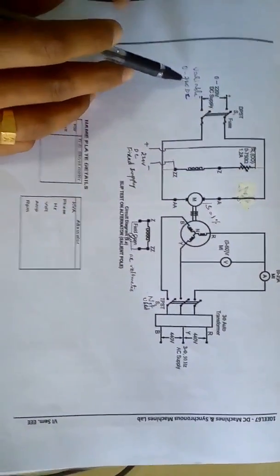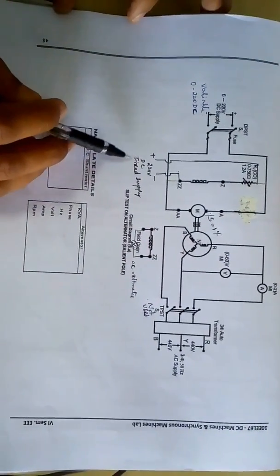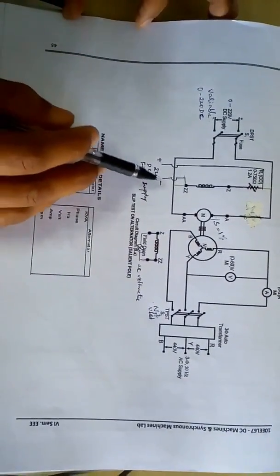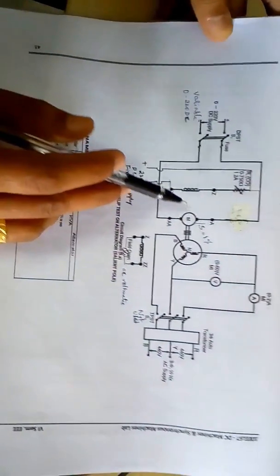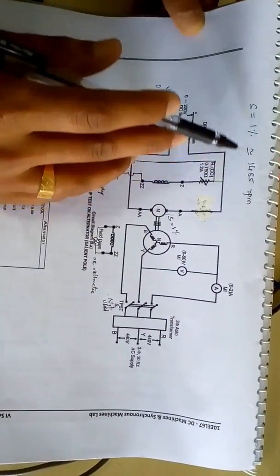we give variable DC supply to the armature through variac, and for the field we are going to give fixed DC supply. We run this motor at less than rated speed, that is approximately 1485 rpm, which is